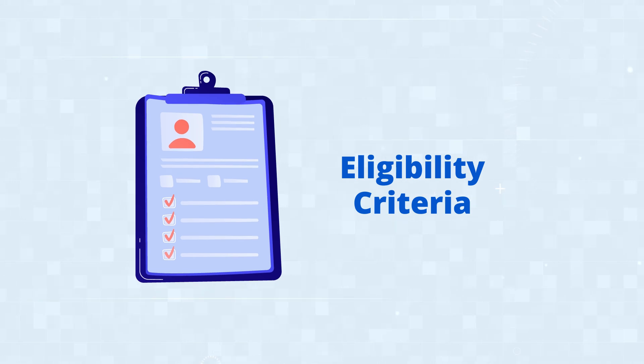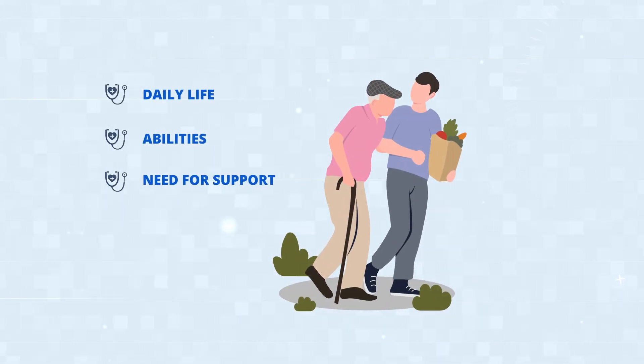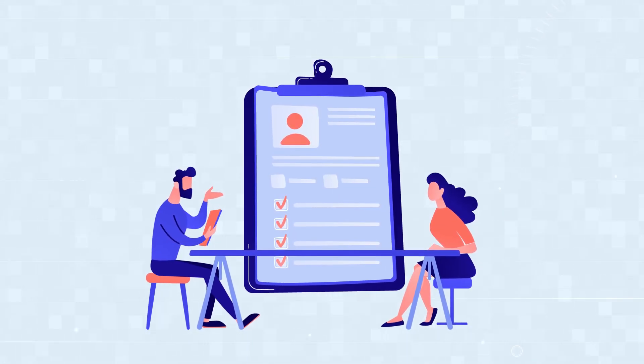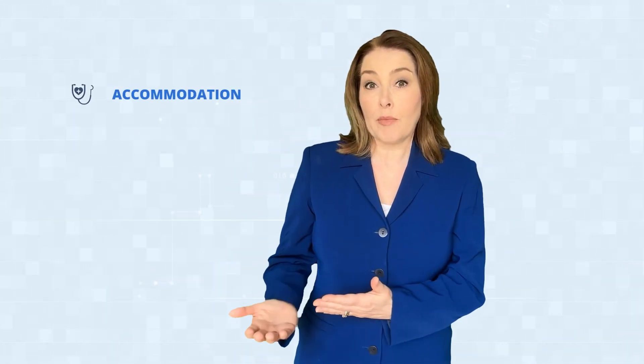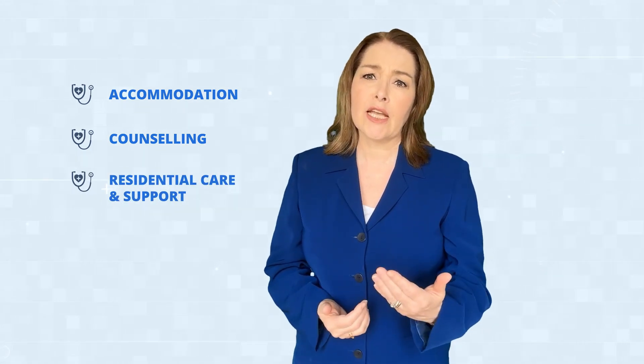To receive social care support, a person's needs must meet the eligibility criteria. The local authority will determine how their condition affects their daily life, abilities and need for support. If eligible, the local authority will plan an applicant's care and support with their input. Needs can be met through accommodation, counselling and residential care. However, a person also has the right to receive direct payment to arrange their own care. The local authority will assess the user's financial circumstances to determine whether they should make a contribution.